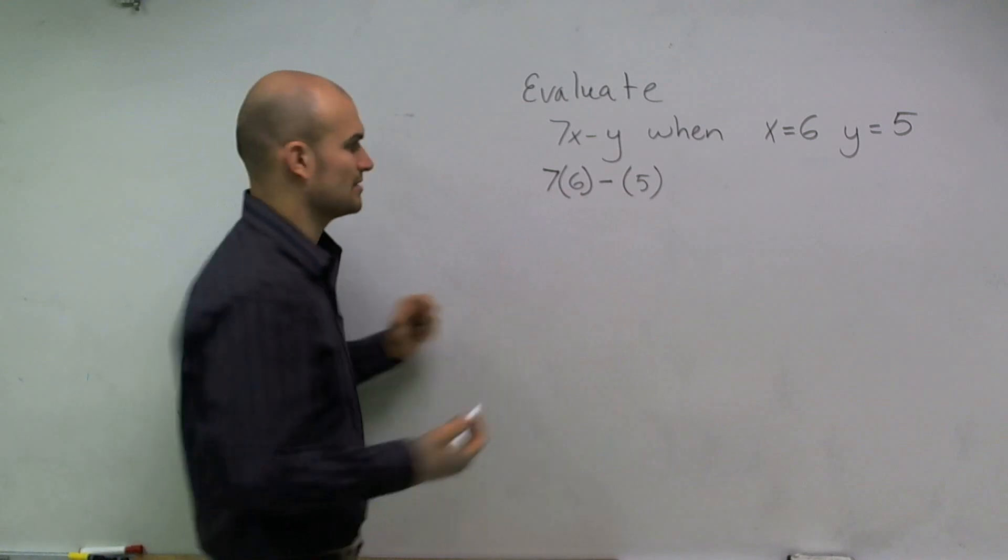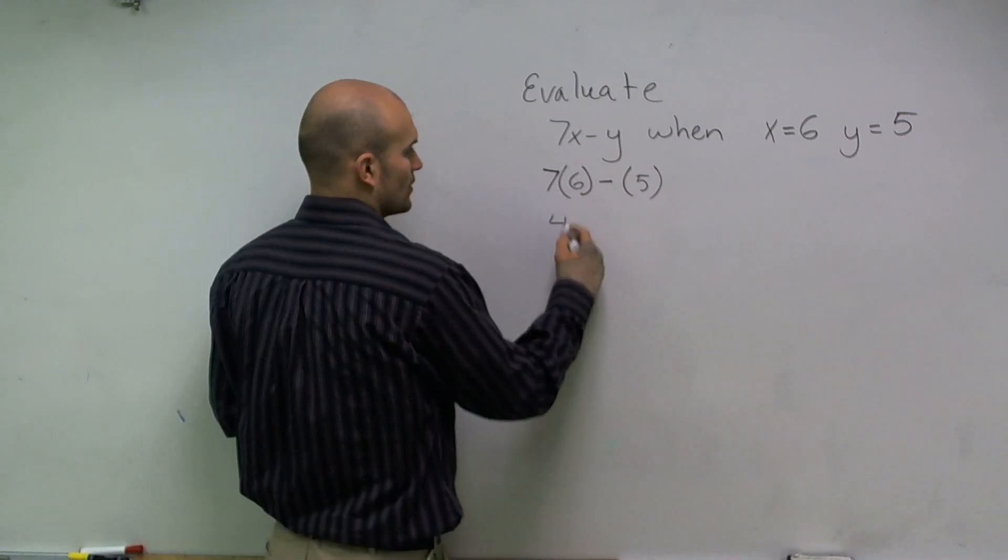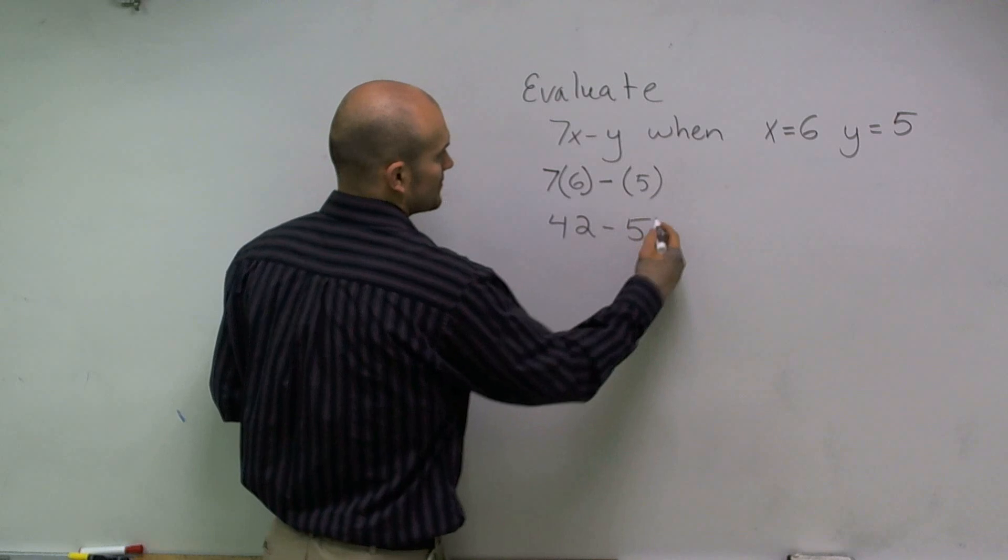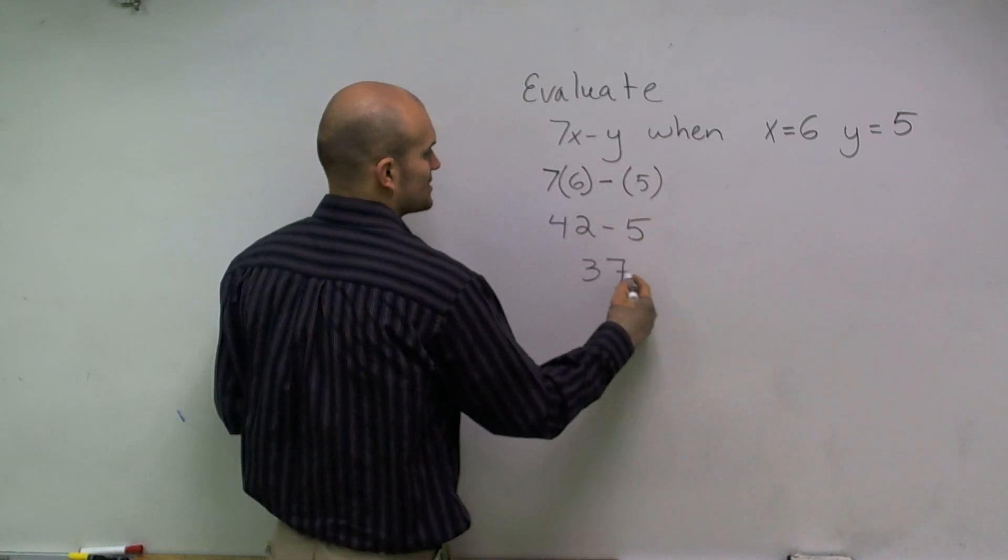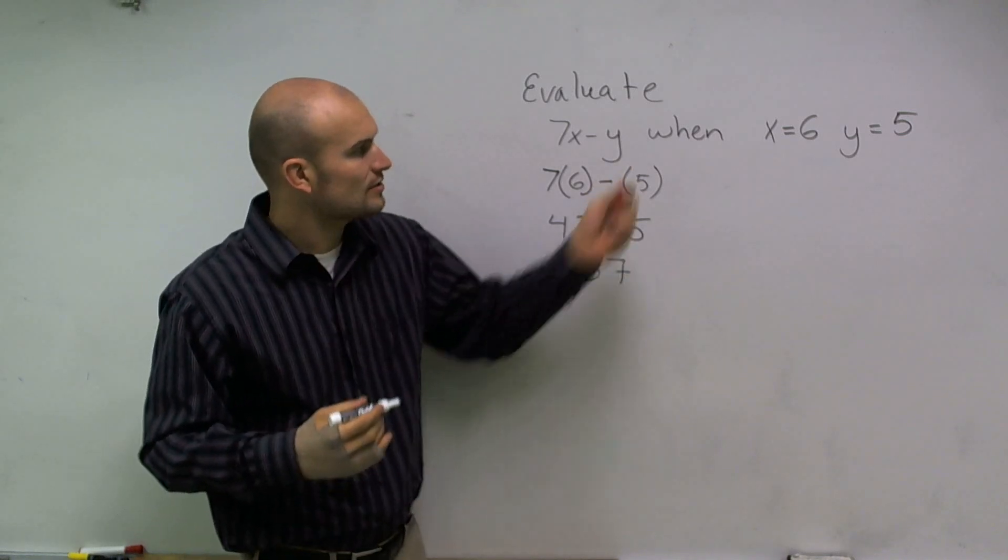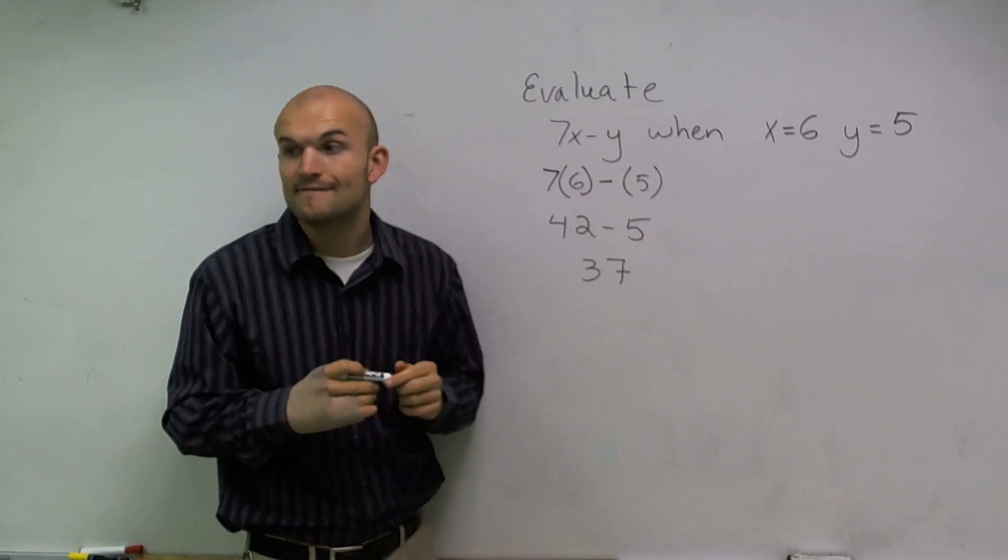Now I can get rid of the parentheses. 7 times 6 is 42 minus 5. 42 minus 5 gives me positive 37. That's how you evaluate an expression when given x equals 6 and y equals 5.